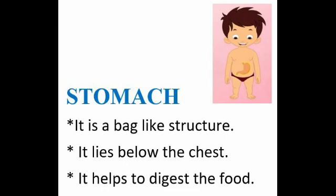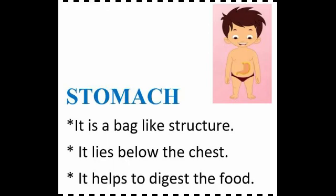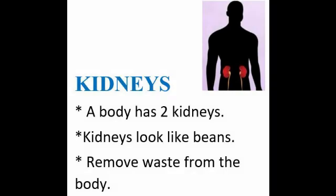Next is the stomach. It is a bag-like structure that lies below the chest. Whatever food you eat, the stomach helps to digest it. Next are the kidneys. A body has two kidneys — they look like beans and normally come in pairs. Kidneys filter and clean the blood and remove waste that the body doesn't need.